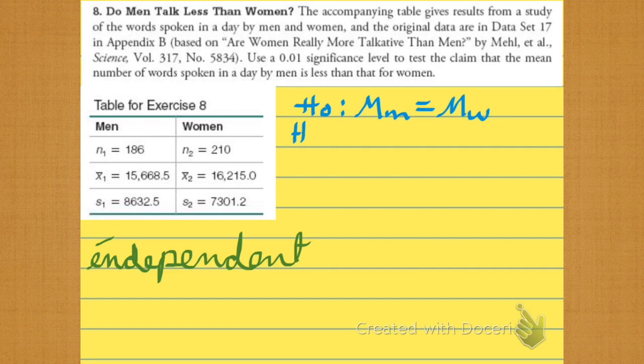Now we're going to set up our null. We're going to assume that they speak the same number of words in a day until we're able to show that the men speak fewer words, because that's what they said right there.